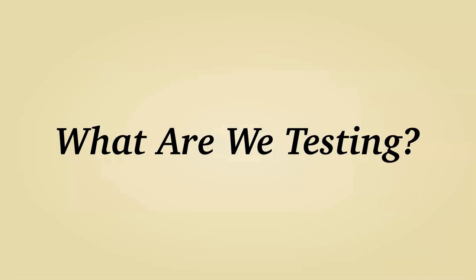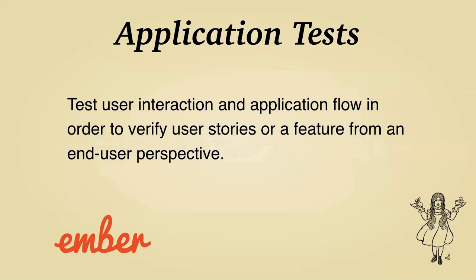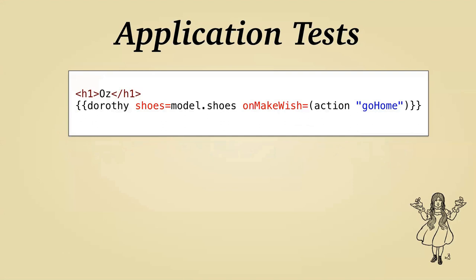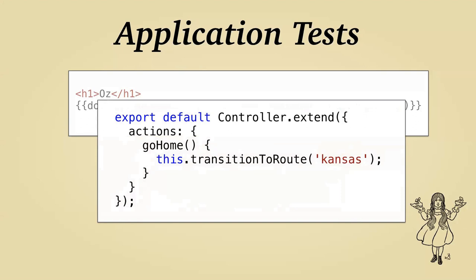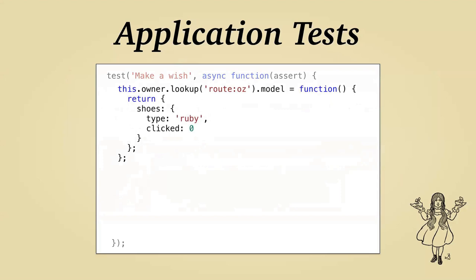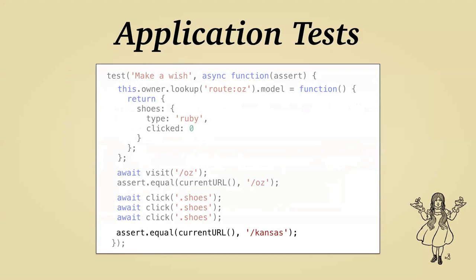Finally, the biggest type are application tests. These are usually testing the application flow and user interactions — good for testing out a full user story. We might have a template for Oz, dropping Dorothy into Oz with shoes from the model, and an action for when she makes a wish to go home. On a controller we have a `goHome` action that transitions her to Kansas. To test this make-a-wish user story, we create a model with ruby slippers, visit Oz, click her shoes three times, and make sure she is now in Kansas. This tests the flow, routing, and what the end user interacts with.